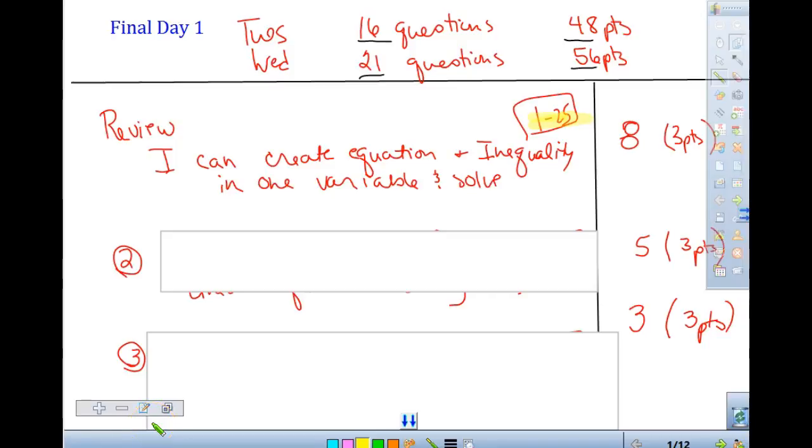Final review packet that you have. It is from questions 1 to 25. From that 1 to 25, there will be eight questions with three points each. Eight questions, three points each.